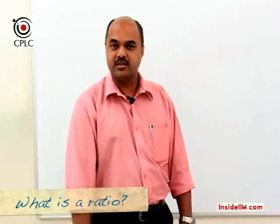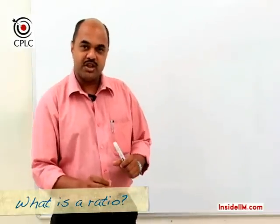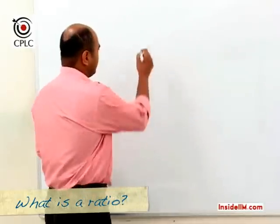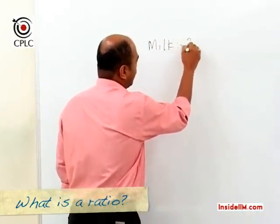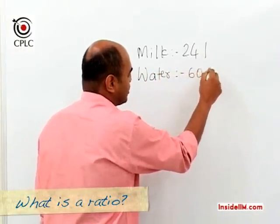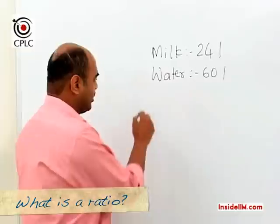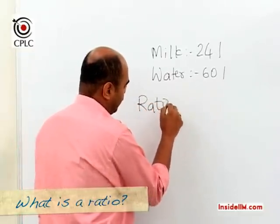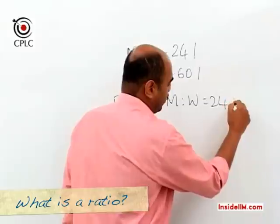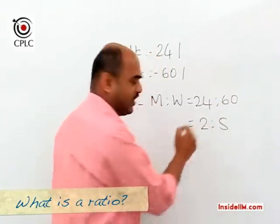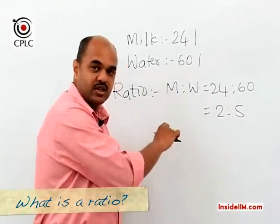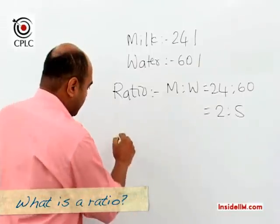Let's understand what is a ratio. Suppose we say that a vessel contains 24 liters of milk and 60 liters of water. If I want to write a ratio, I would say milk to water would be 24 is to 60, which is nothing but 2 is to 5. So as a ratio, milk and water in this vessel will be in the ratio 2 is to 5.